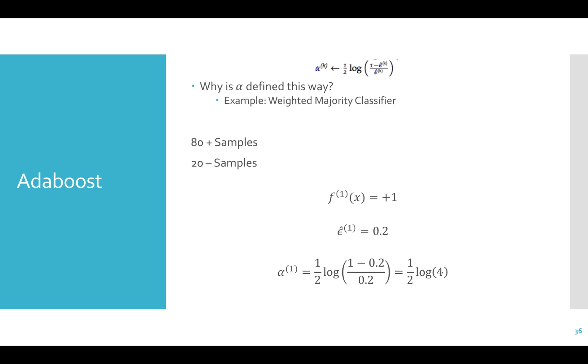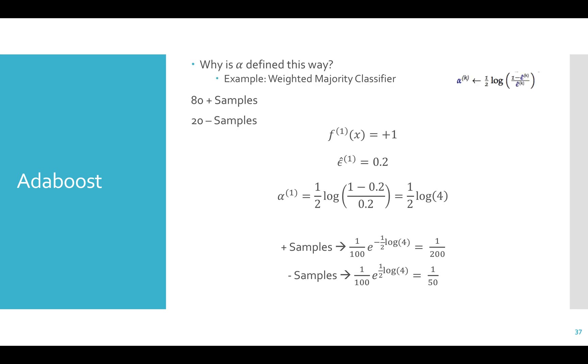Now we calculate alpha. We would get 1.5 log of 4. Before normalization, we get the new weight for each positive or correct example to be 1 over 200. And we get the weight for each negative or incorrect example as 1 over 50.